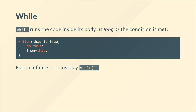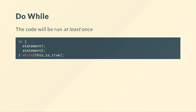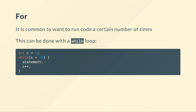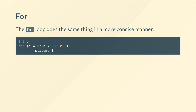A do-while statement means the code will be run at least once. The for loop is a special case of the while loop, and that's why the while loop is the fundamental one. You can write a while loop that starts at some value 0, and whilst c is less than 10, does something and increments each time — so it runs 10 times. The for loop does exactly the same thing in a more concise manner.